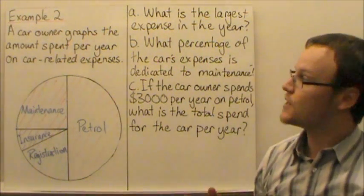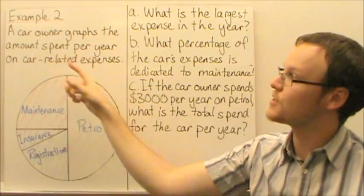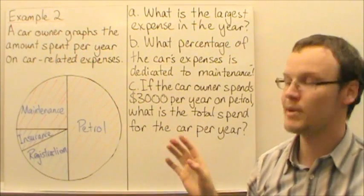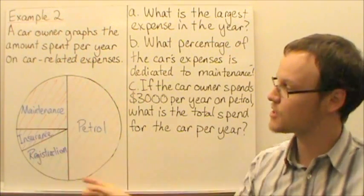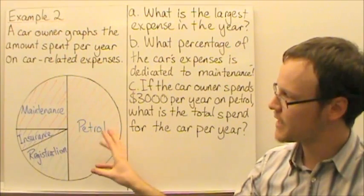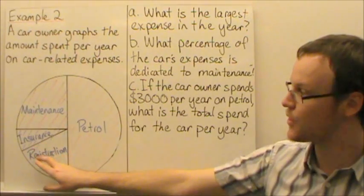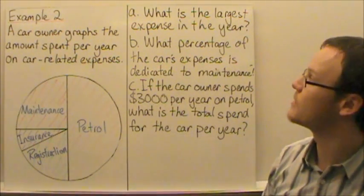Our second example for today, we've got a pie chart here. A car owner graphs the amount spent per year on car-related expenses. So this is how much they've spent on their car. So here we can see petrol taking up the most, maintenance the second largest amount, registration the third, and insurance the smallest amount.